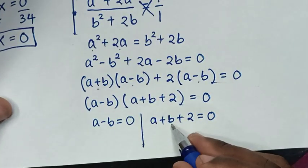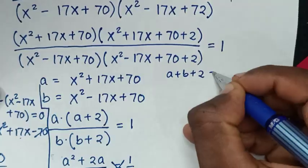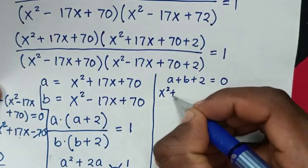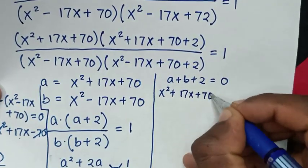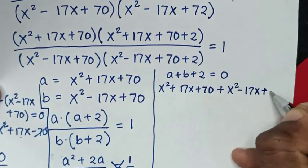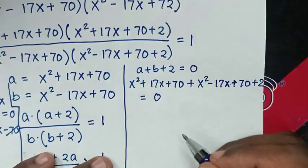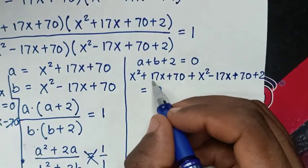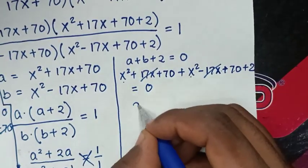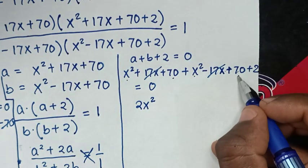For the second solution, a+b+2=0: substituting gives (x²+17x+70) plus (x²-17x+70) plus 2 equals 0. The 17x and -17x cancel. Then x² plus x² is 2x², and 70 plus 70 is 140, plus 2 gives 142. So 2x²+142 equals 0.